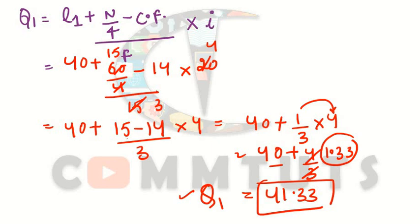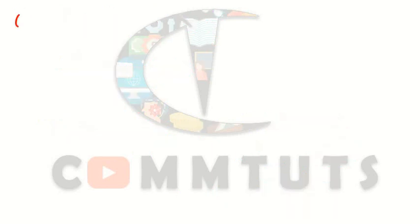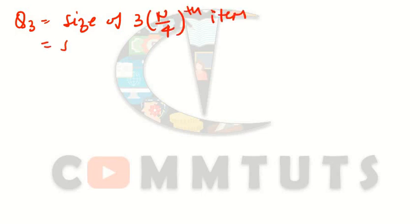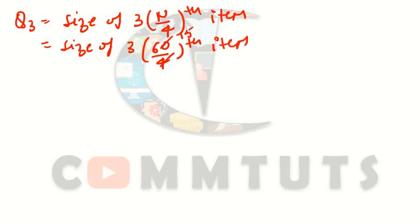Now we calculate Q3 (third quartile). The size of Q3 is 3 × N/4. Here, 3 × 60/4 = 3 × 15 = 45. So we need the size of the 45th item. Checking our data, the 45th item lies in the class 60 to 80.